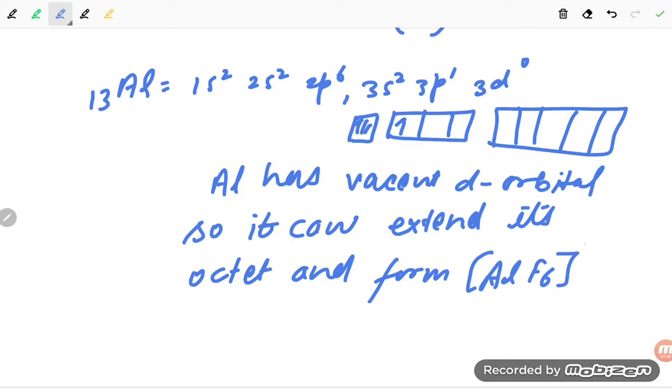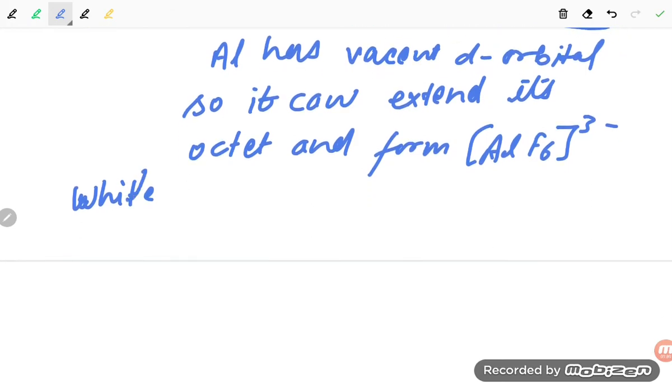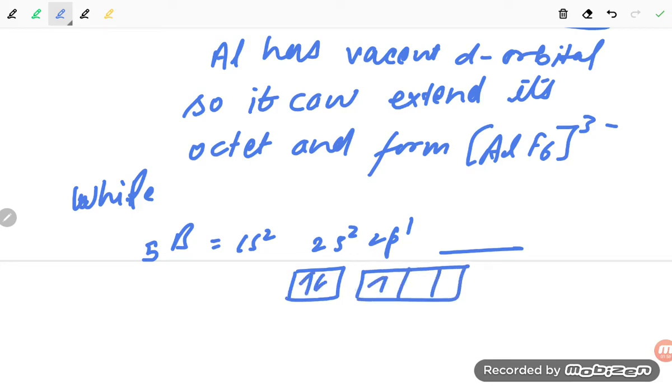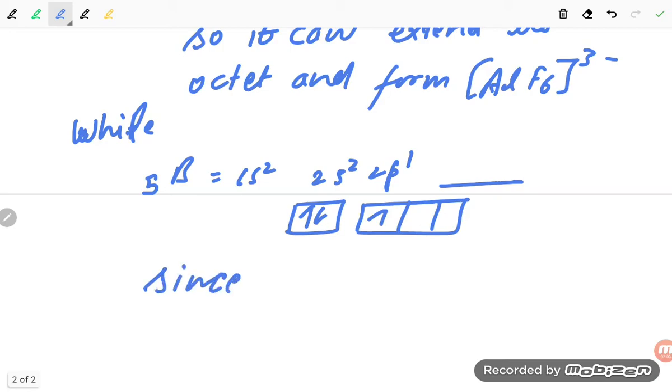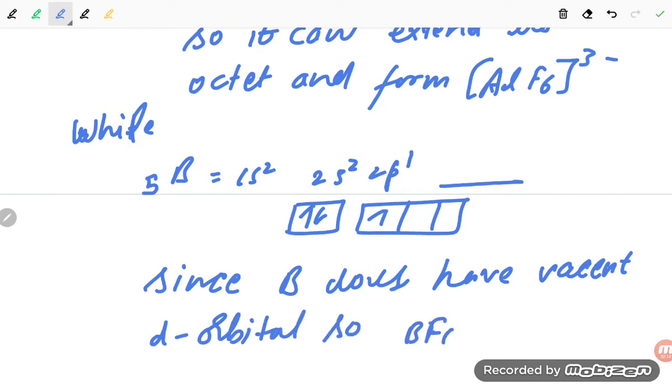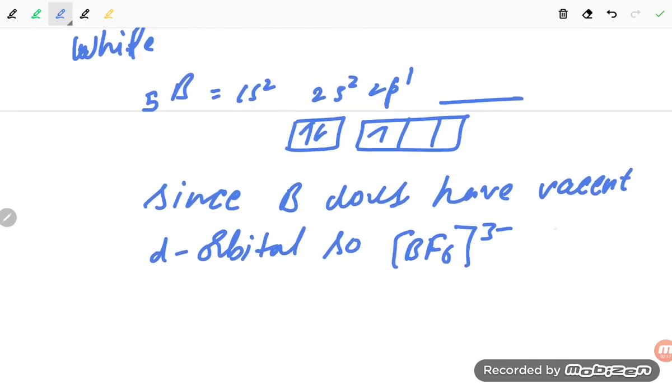While if you talk about boron, it is 5, so 1s² 2s² 2p¹. There is no d-orbital because d comes after the third orbit. Since boron does not have vacant d-orbitals, [BF6]³⁻ does not form.